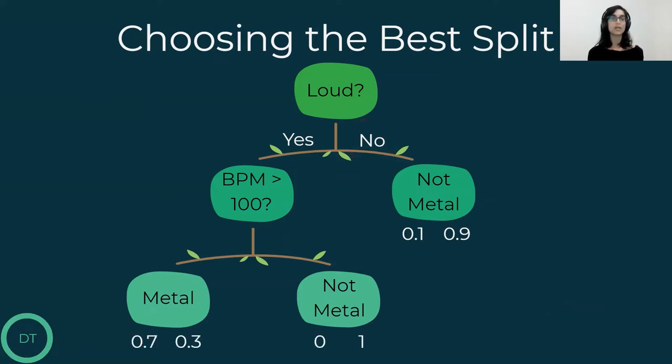And we can see that only one leaf classifying songs as not metal is pure, which means that in our dataset, all songs that are loud and slow are not metal songs, while the two other leaves are impure since they consist of both metal and non-metal songs.